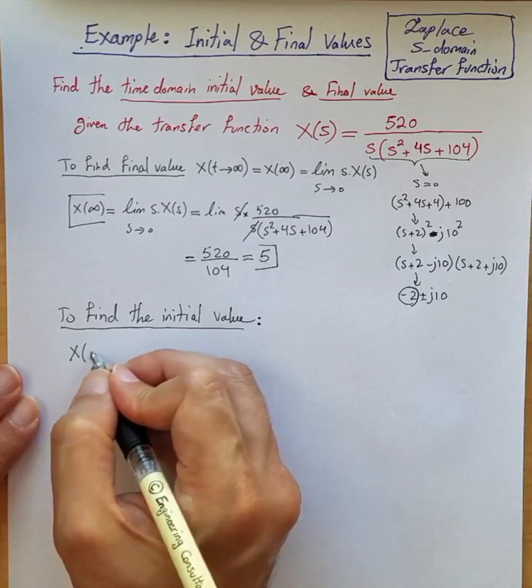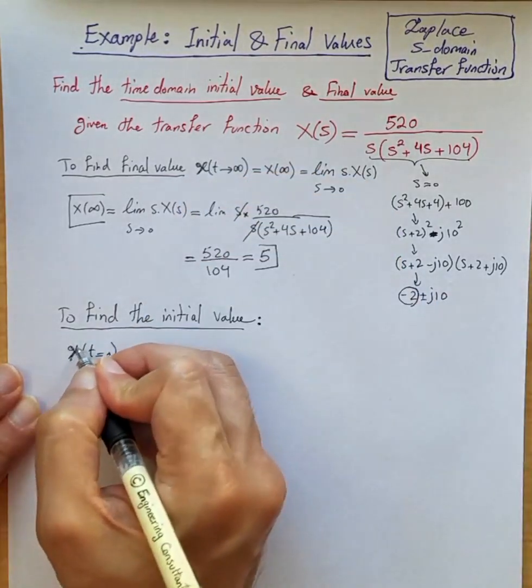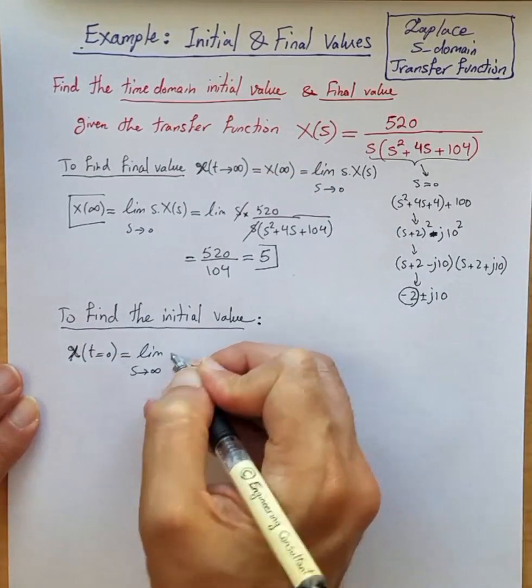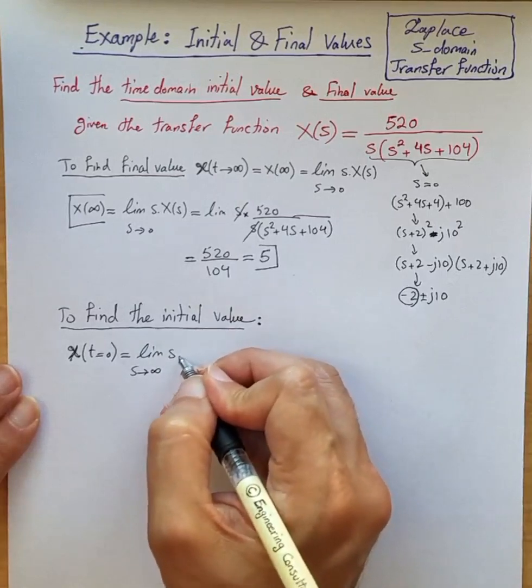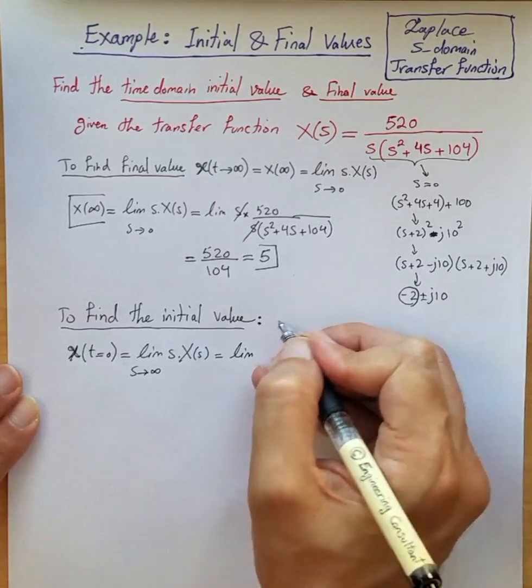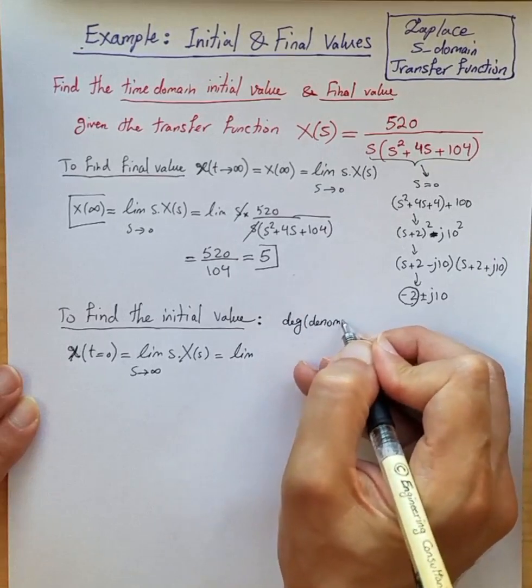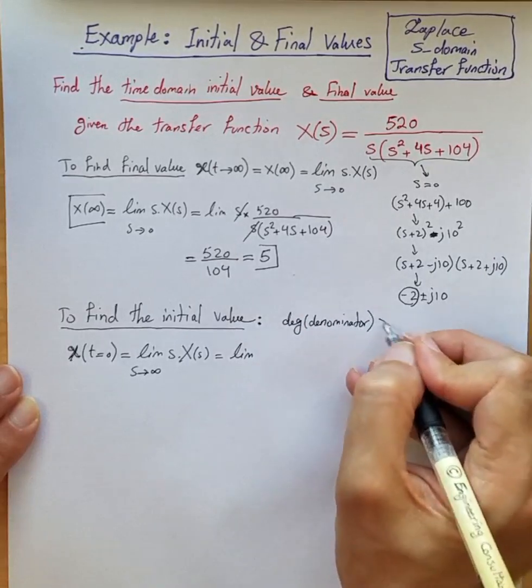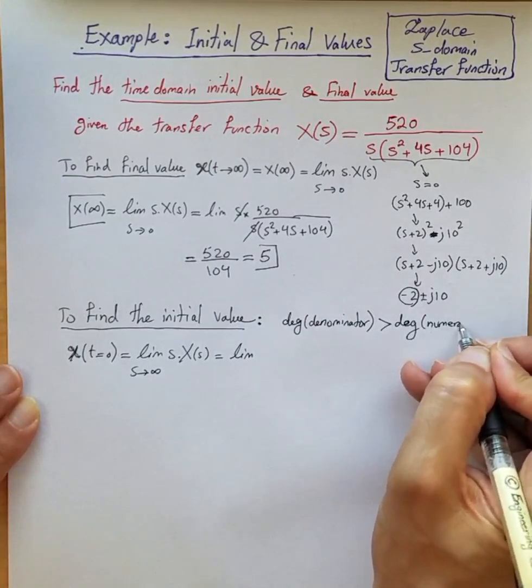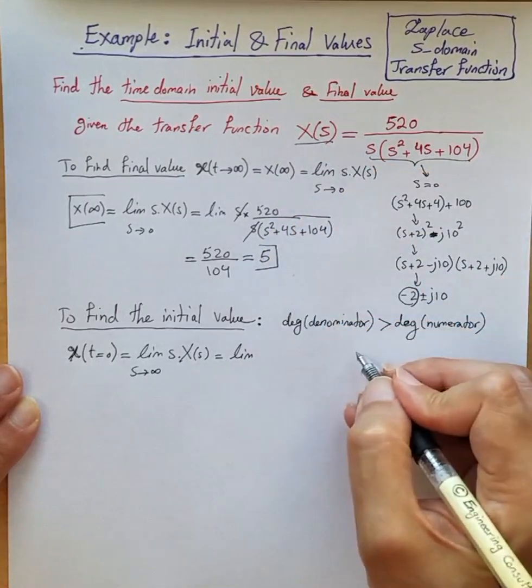So x(t=0), this is the time domain function by the way, which is just equal to the limit as s goes to infinity of s times X(s). The degree of the denominator is greater than the degree of numerator for X(s), so this is a check mark.